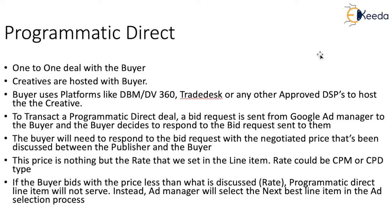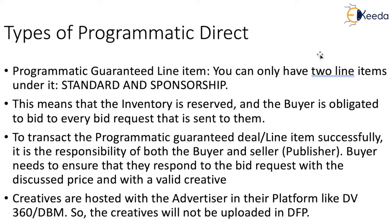There are two types of programmatic direct. The first is called programmatic guaranteed. Programmatic guaranteed refers to guaranteed line items — specifically standard and sponsorship. You can set up standard and sponsorship programmatic guaranteed line items in Ad Manager and negotiate a deal with the desired buyer. When we talk about standard and sponsorship, the inventory is reserved because these are guaranteed, and the buyer is obligated to bid on every bid request sent to them. Ideally the buyer should bid to each and every bid request that Ad Manager sends to their platform — that is why this is called programmatic guaranteed.